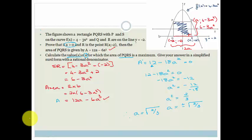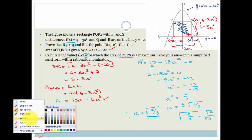They've said they want you to simplify your answer with a rational denominator. So if you look at this, you can see that I haven't got a rational denominator here. I have got the square root of 2 over 3, which can be rewritten as the square root of 2 over the square root of 3. So how do we rationalize that?